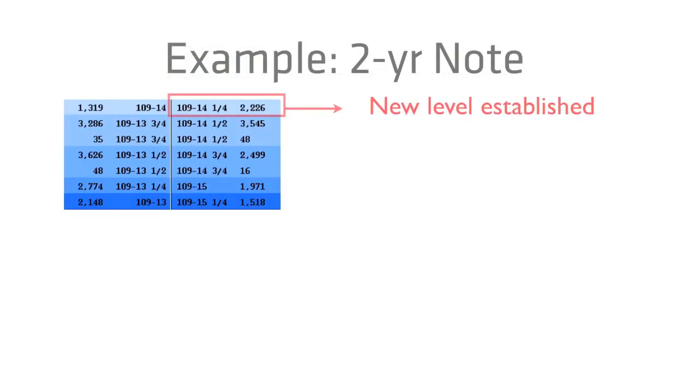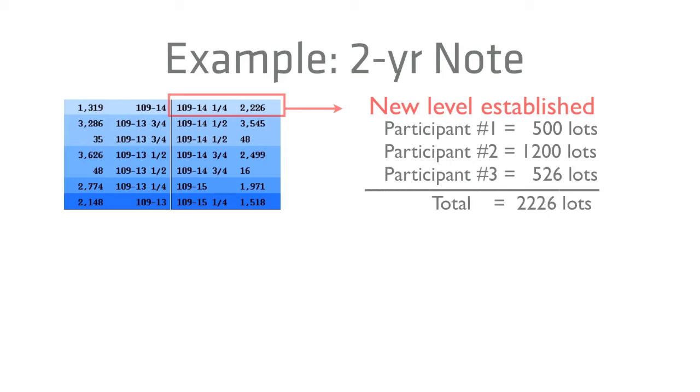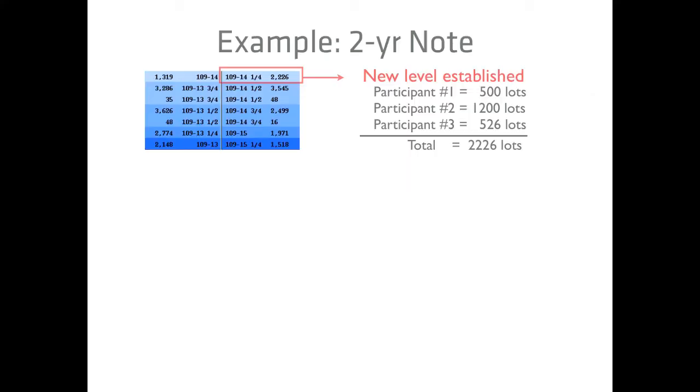Here's an example in a two-year note contract. A new best offer is established by participant 1 entering an order to sell 500 at 14.25. Participants 2 and 3 then join participant 1 by offering 1,200 and 526 lots respectively for a total of 2,226 lots at the level.